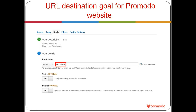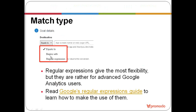You can set up one exact URL — that's the 'equals' option — or choose 'begins with,' meaning any additional characters can be appended after the URL. The most flexible option is regular expressions, which let you build URL patterns to trigger the goal. Regular expressions are powerful but a little tricky, so we advise you to read Google's regular expression guide to learn how to use them.